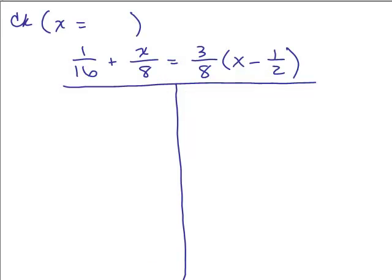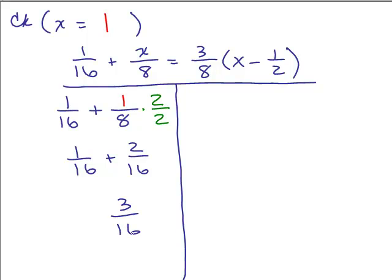So let's check our answer. We got x is 1, so we have to plug in 1 for x and do the order of operations on each side. And we need to get a common denominator to add 1/16 plus 1/8. So we can multiply by 2/2. So 1/16 plus 2/16 is 3/16.